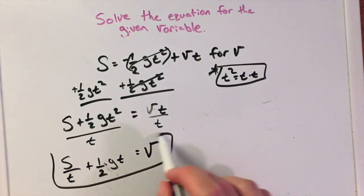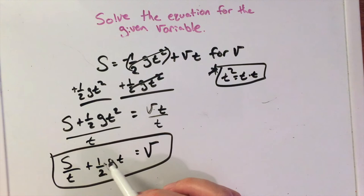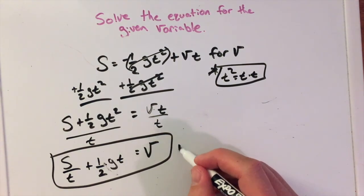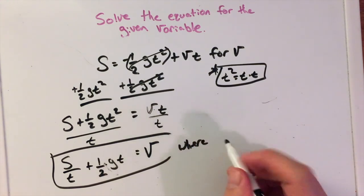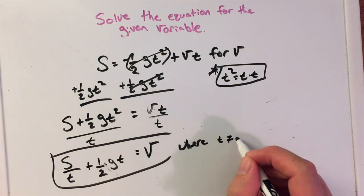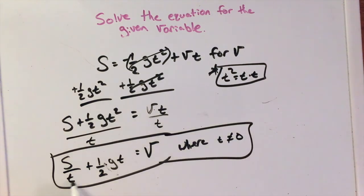We have v equals s over t plus one-half g times t, where t is not equal to zero, because we'll be dividing by zero here and that would make it undefined.